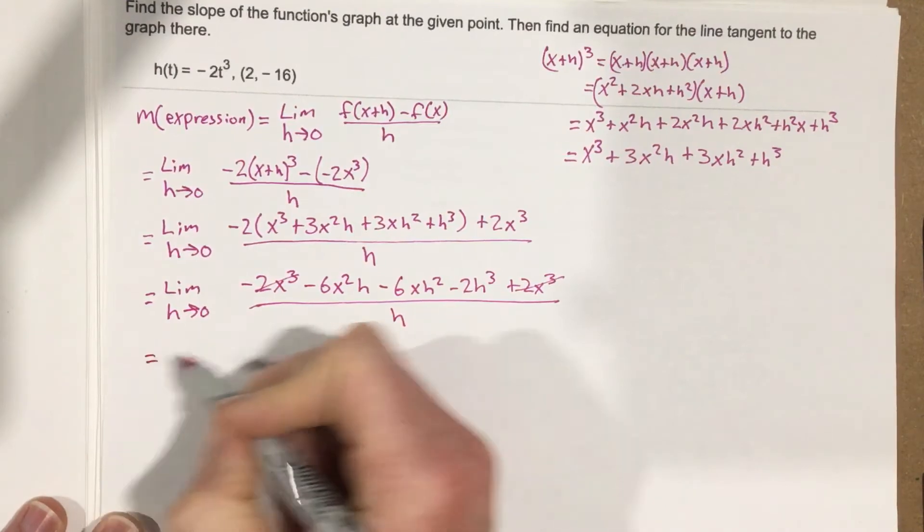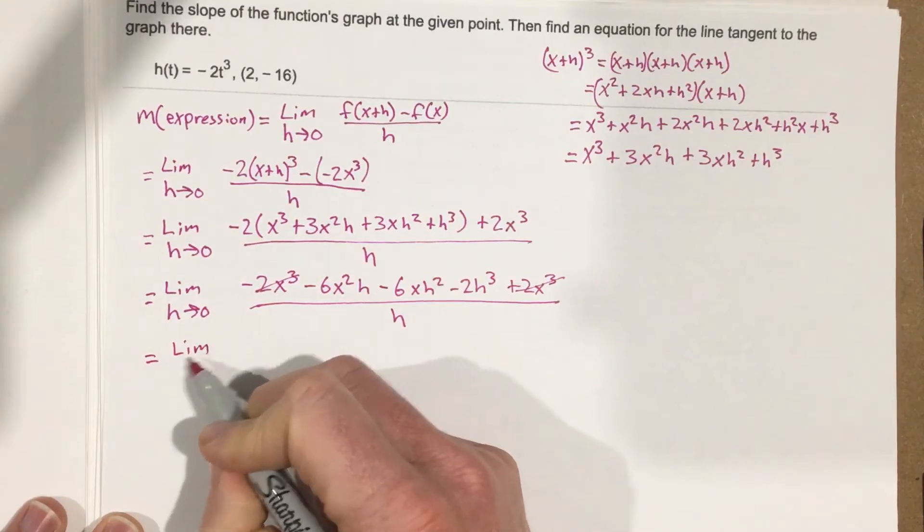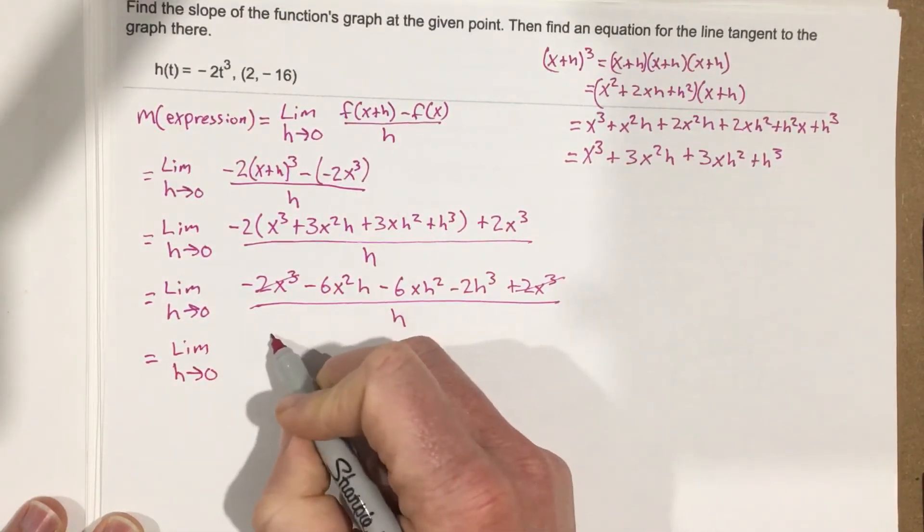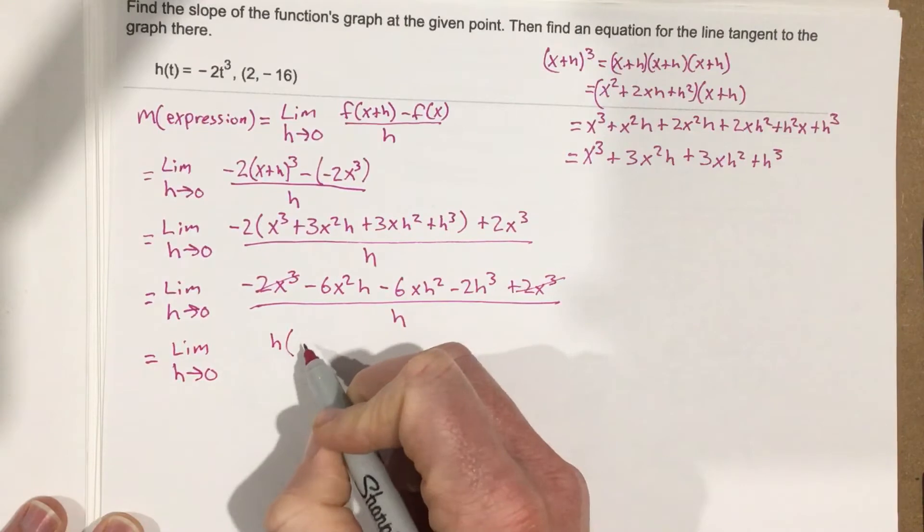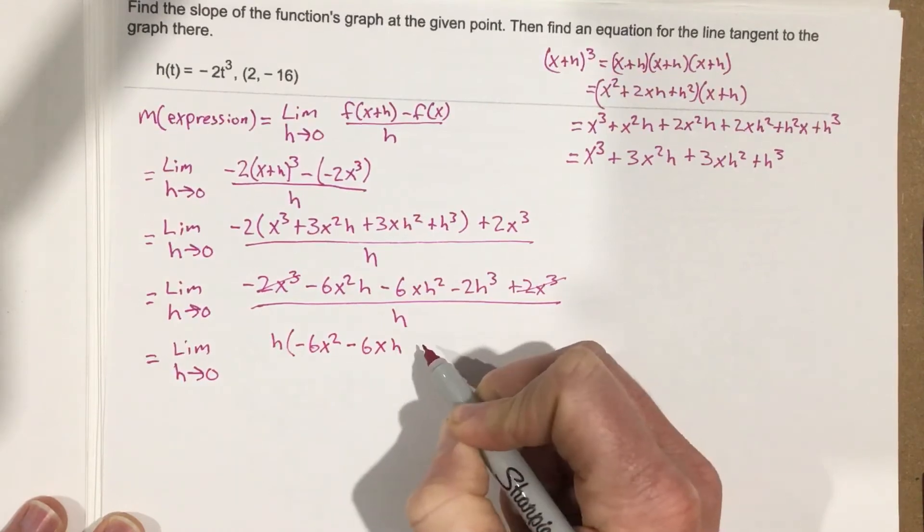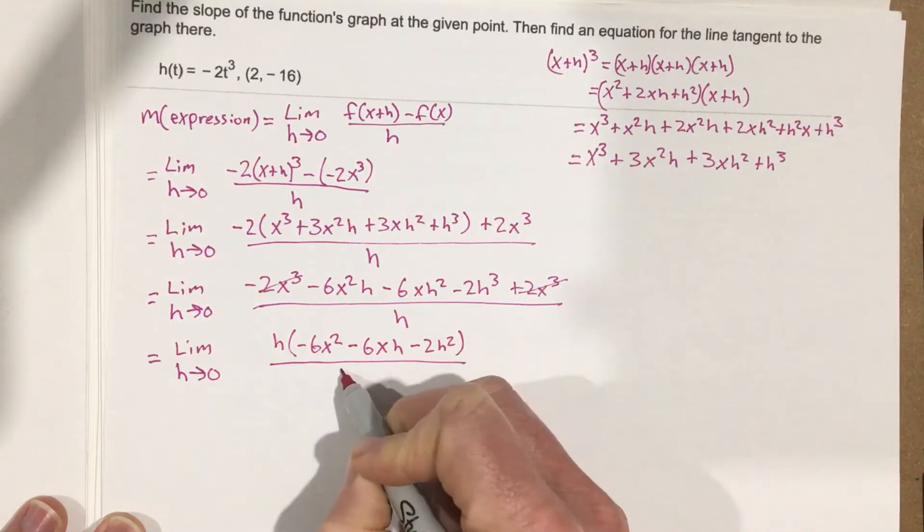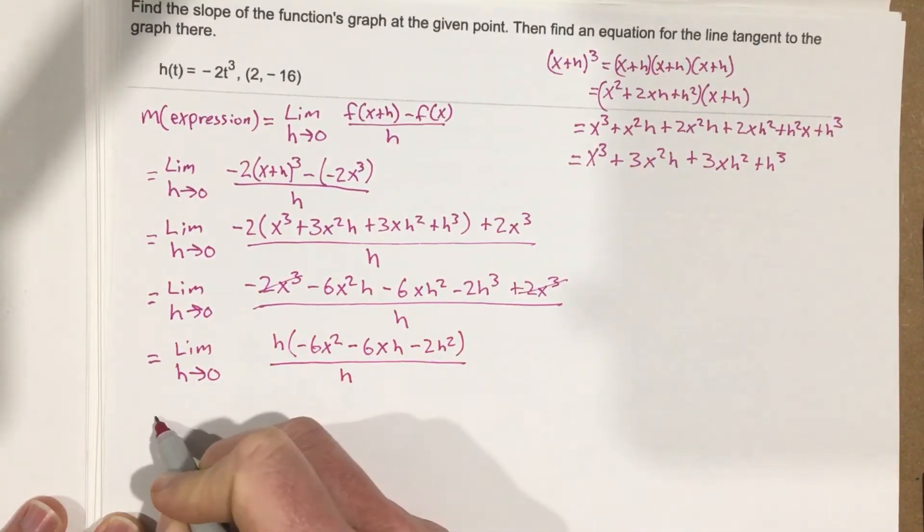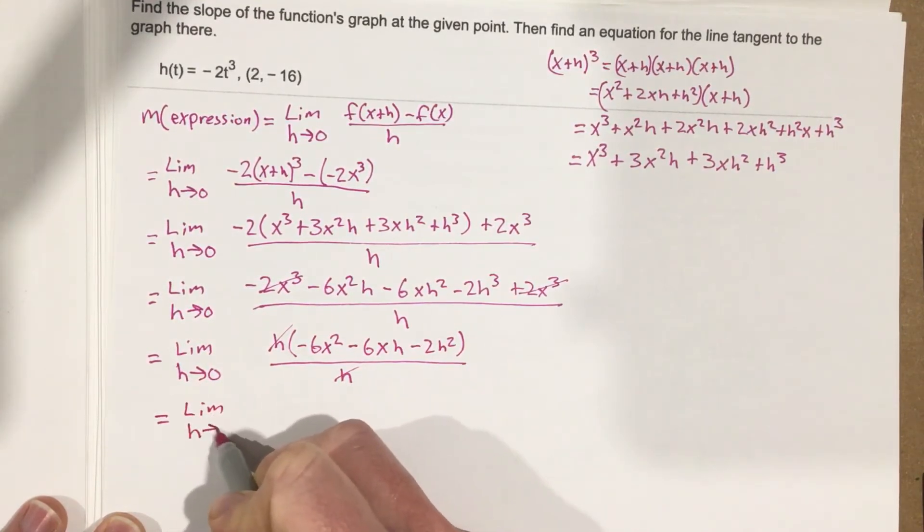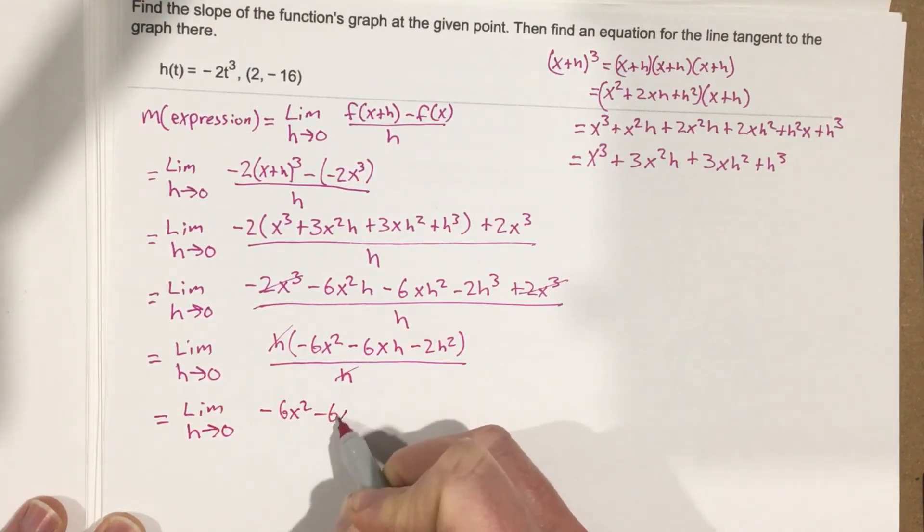And let's factor out an h at the same time. Now we've canceled those, so we can factor an h out of the top, and we'll get limit as h approaches 0 of h times negative 6x squared minus 6xh minus 2h squared all over h. We can cancel the h's. And we have limit as h approaches 0, negative 6x squared minus 6xh minus 2h squared.